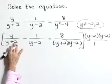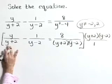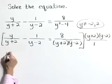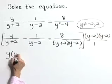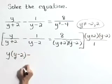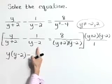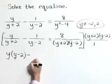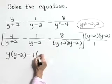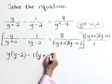As we multiply that times y over y plus 2, the y plus 2's cancel, leaving y times y minus 2. Minus sign next. As we multiply that times our next term, the y minus 2's cancel, leaving 1 times y plus 2.